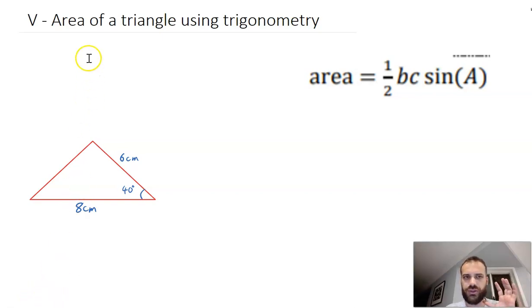All right, so let's keep this short and sweet. We're going to do the area of a triangle using trigonometry. We're going to use this formula right there. Area equals half BC sine A.